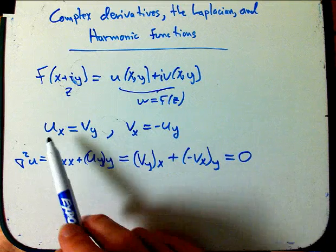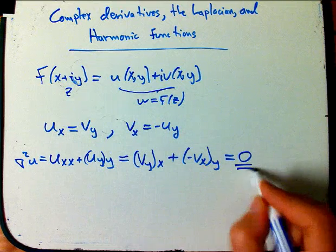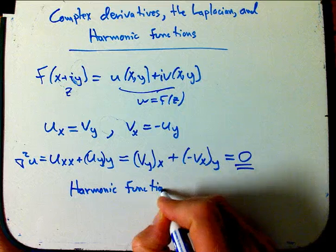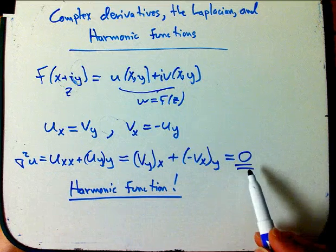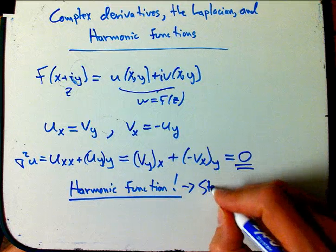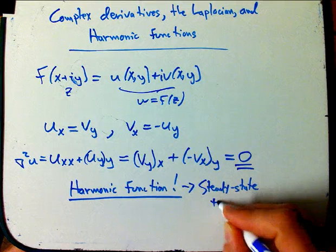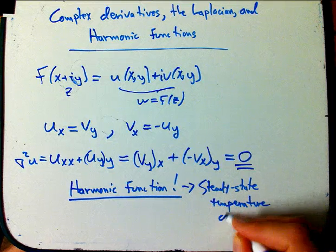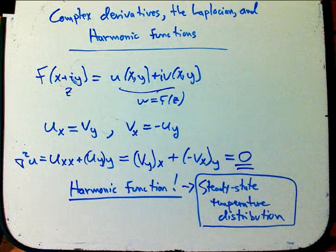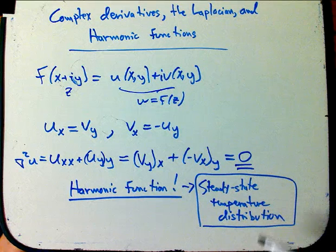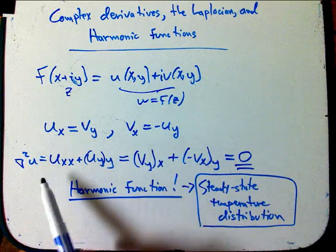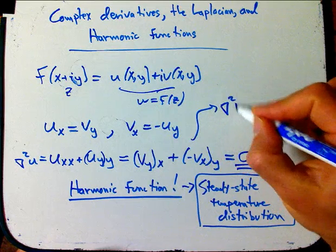So, lo and behold, the real part of a complex differentiable function is a harmonic function — that's our terminology for a solution of Laplace's equation, where the Laplacian equals zero. For example, one way to think about it is it could be like the steady state temperature distribution in the plane. If you look at the heat equation, that involves the Laplacian, and if the Laplacian of some function equals zero, that is a temperature distribution that is steady state — something that doesn't change in time. And there's nothing special about u here; the Laplacian of v equals zero as well.